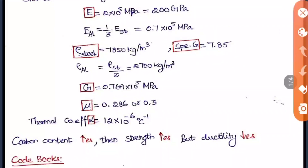Mild steel has zero point two five percentage carbon content. Stainless steel is an alloy of iron and chromium. Now here are some basic properties of steel you should be very clear about. There are six key definitions: E (modulus of elasticity), density, specific gravity, G (rigidity modulus), mu (Poisson's ratio), and alpha (thermal coefficient). These six properties are very important for steel.